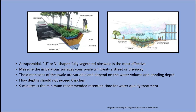Bioswales are most effective if constructed with a trapezoidal shape, though a U or V shape is also quite effective. The bioswale on the left receives water as sheet flow from the street and sidewalk in a municipal setting. The one on the right can be constructed easily using a shovel — no heavy equipment needed — receiving water from downspouts through a pipe and gravel trench directed into the bioswale. Flow depths should not exceed 6 inches, and the minimum recommended treatment time — the time water should remain in the bioswale — is 9 minutes. For that reason, a slope of less than 10% is recommended.